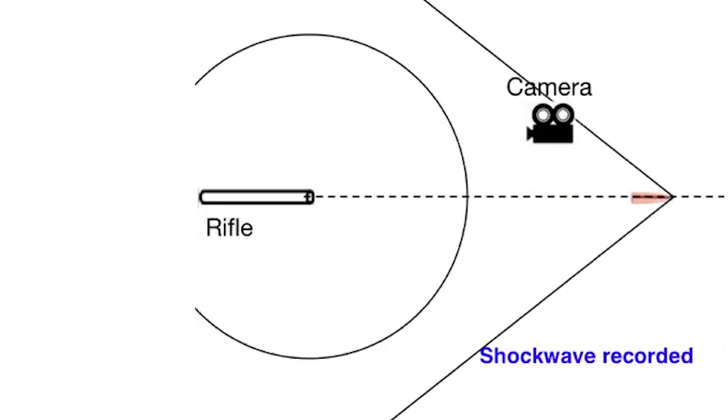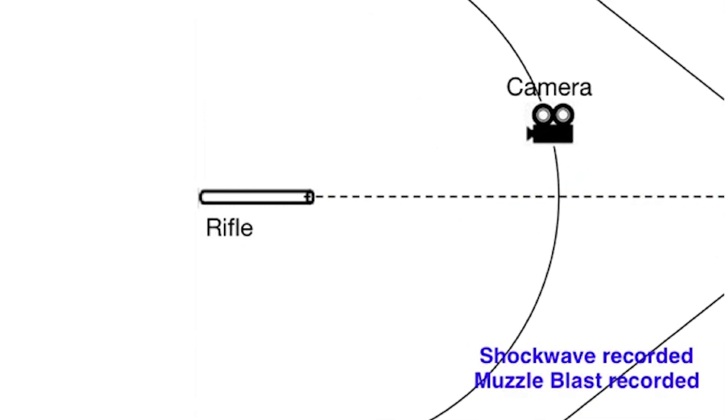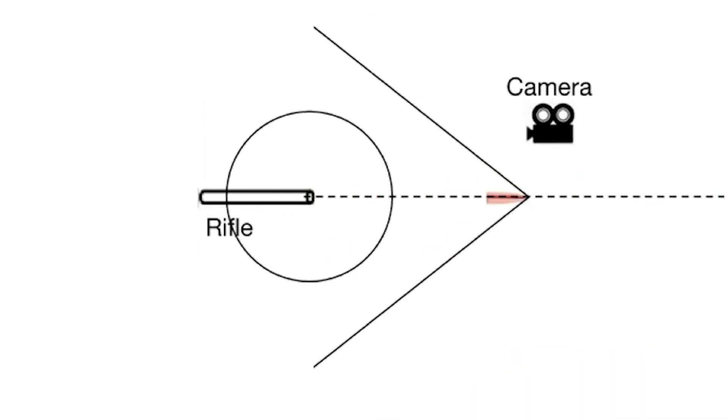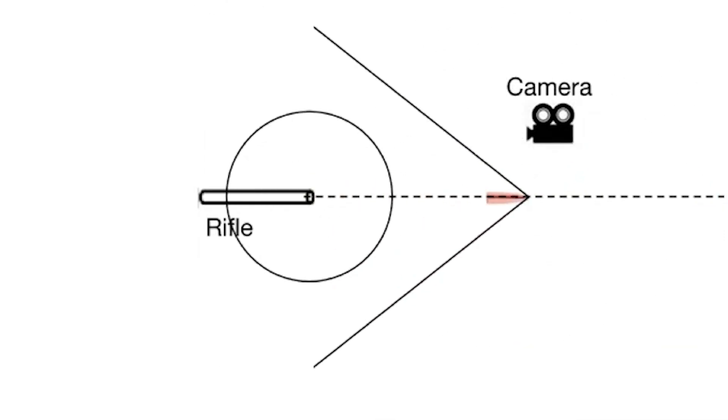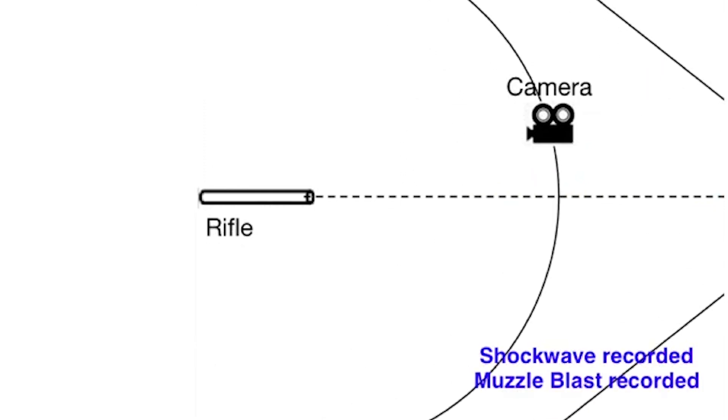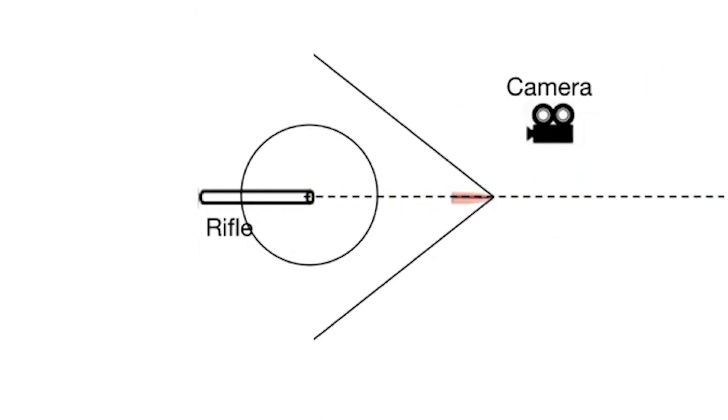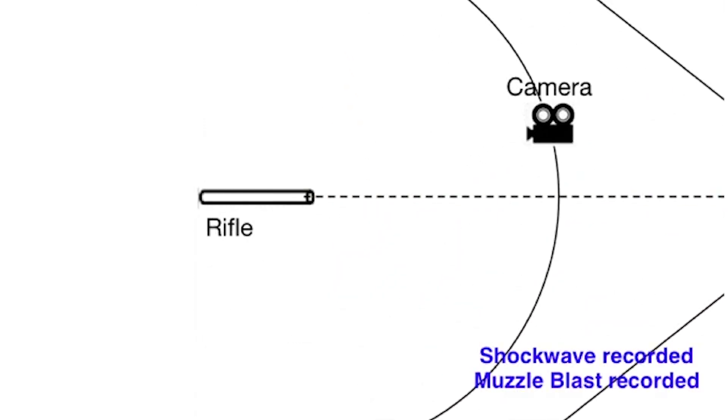But then if you're within 30 degrees of the trajectory of the bullet, the bullet travels faster than sound. So it'll get to the vicinity of your ear faster than the gunshot muzzle sound. And that sound is sometimes known as the crack.